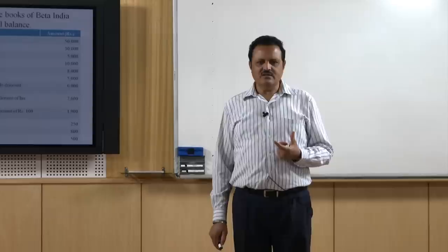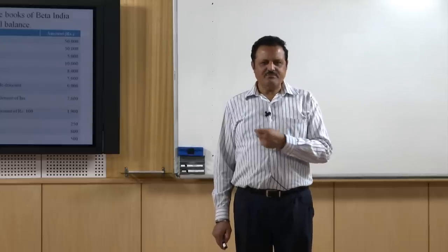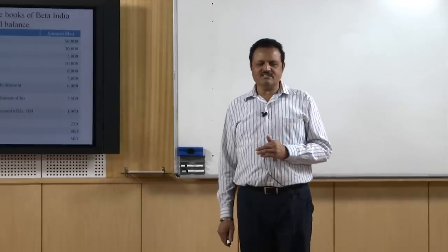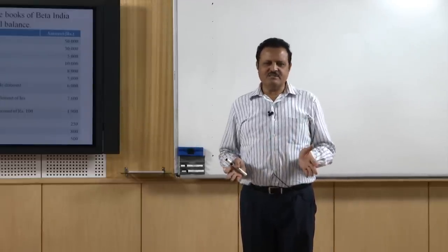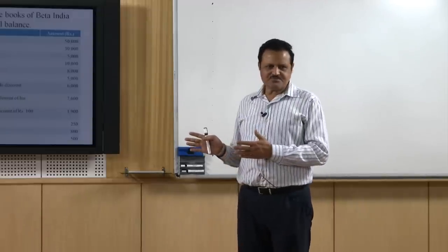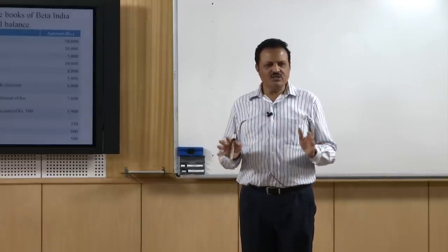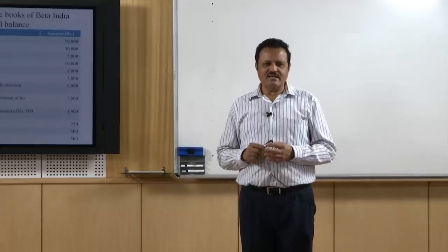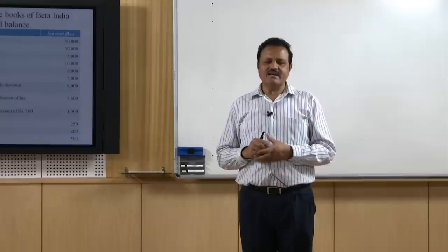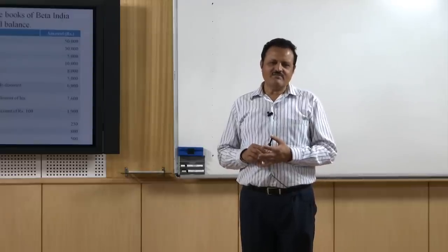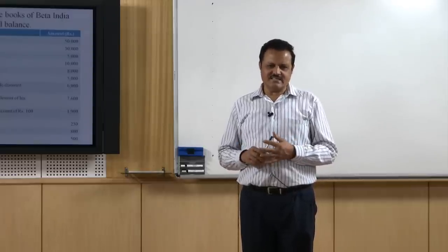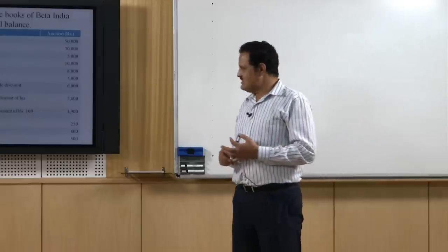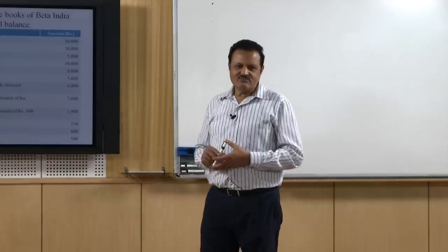We are learning how to prepare the journal — a journal proper, meaning a common journal, not different specific journals. If it is a specific journal, the process will remain the same; only the name of the journal will change. We will learn how to record the transactions first in the journal. Next step will be to take these transactions to the ledger, then from the ledger to the trial balance, and from trial balance we can learn how to prepare the profit and loss account and balance sheet — these are the basic financial statements.